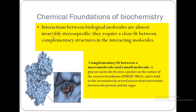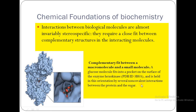Interactions between biological molecules are almost invariably stereospecific — they require a close fit between complementary structures in the interacting molecules. Here you can see a complementary fit between a macromolecule and a small molecule: a glucose molecule fits into a pocket on the surface of the enzyme hexokinase. Glucose is held in this orientation by several non-covalent interactions between the protein and the sugar.